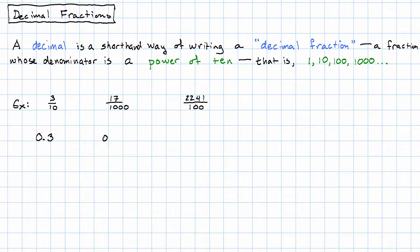To write seventeen thousandths, I would write zero point zero one seven. To write two thousand two hundred forty one hundredths, I would write twenty two point four one.